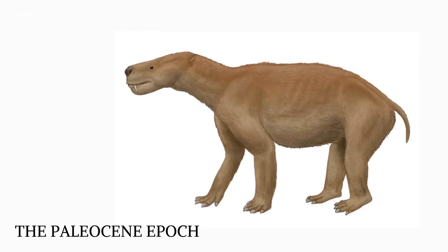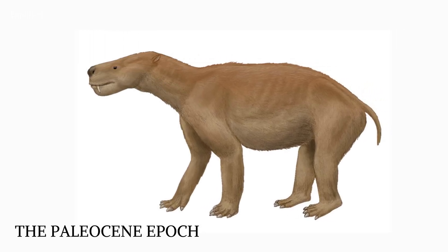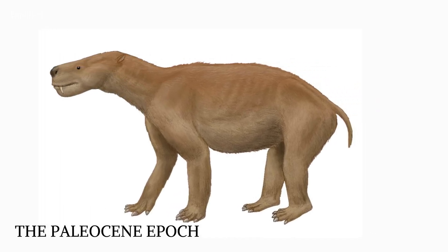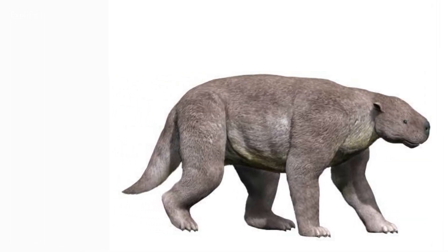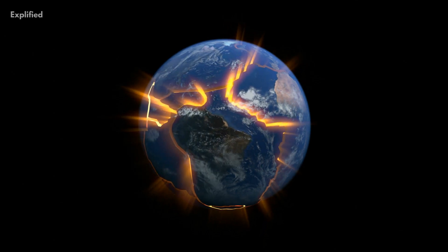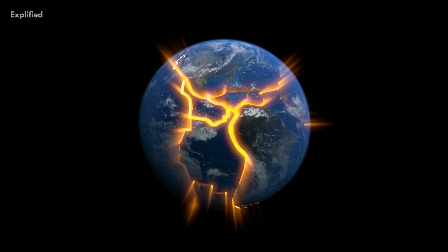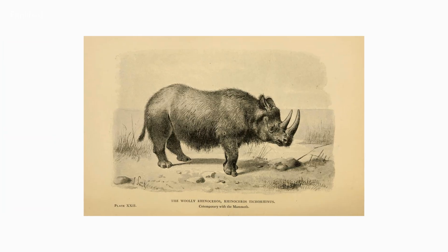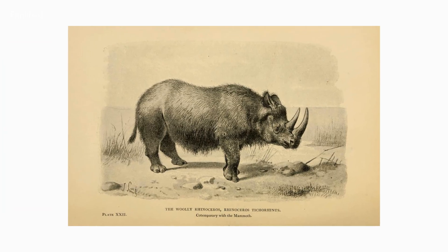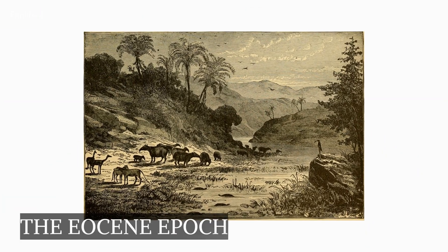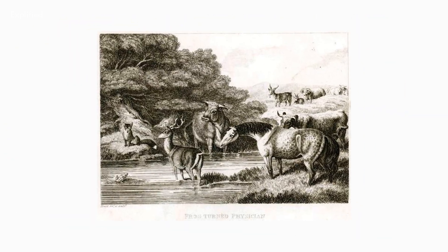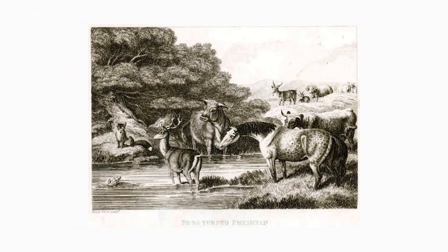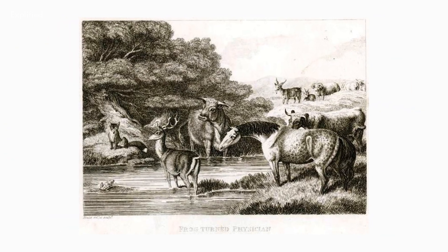The Paleocene Epoch, which lasted between 66 million and 56 million years ago, was the first significant global division of rocks. The Cretaceous period preceded the Paleocene Epoch, which was followed by the Eocene Epoch. This epoch spans two significant periods in Earth's history.